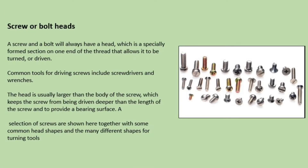Screw or bolt heads. A screw and a bolt will always have a head which is a specially formed section on one end of the thread that allows it to be turned or driven. Common tools for driving screws include screwdrivers and wrenches. The head is usually larger than the body of the screw, which keeps the screw from being driven deeper than the length of the screw and to provide a bearing surface. A selection of screws are shown here together with some common head shapes and the many different shapes for turning tools.